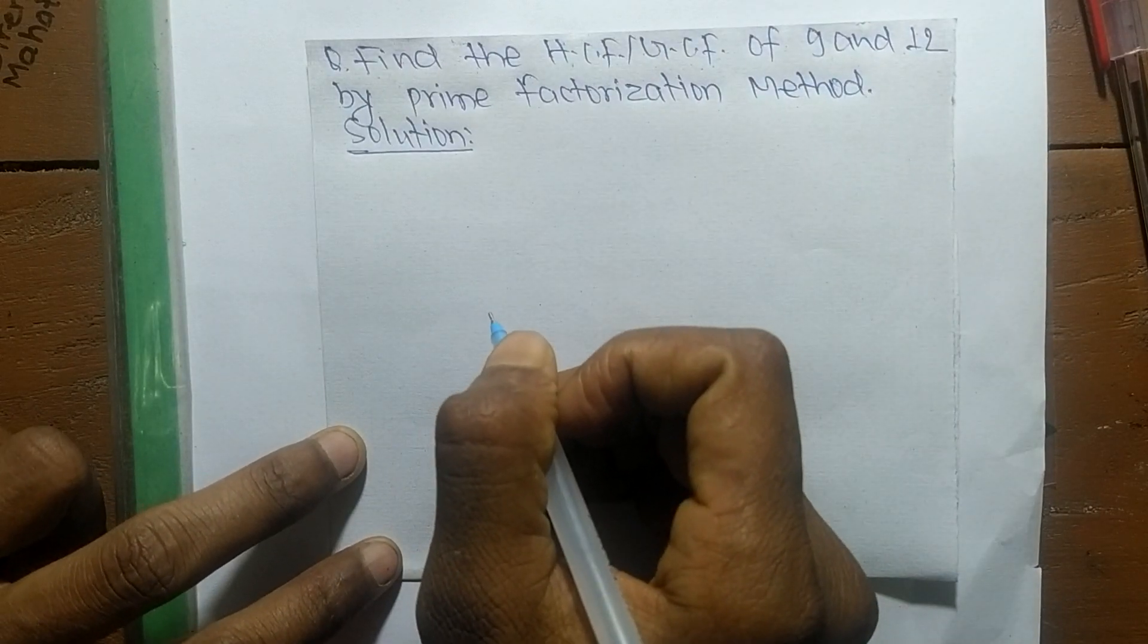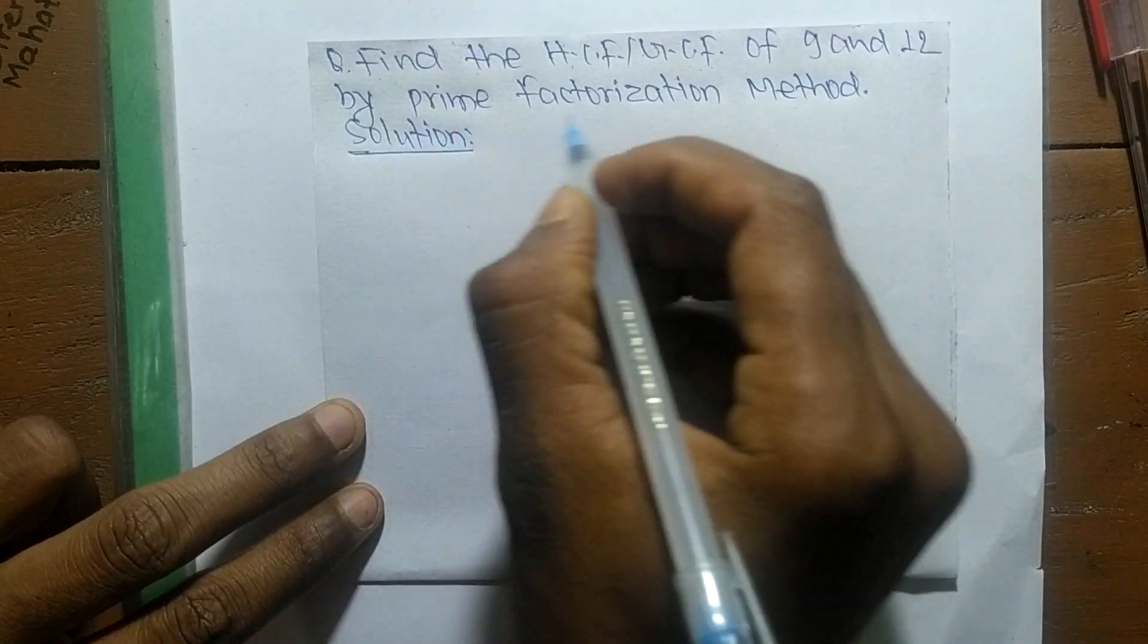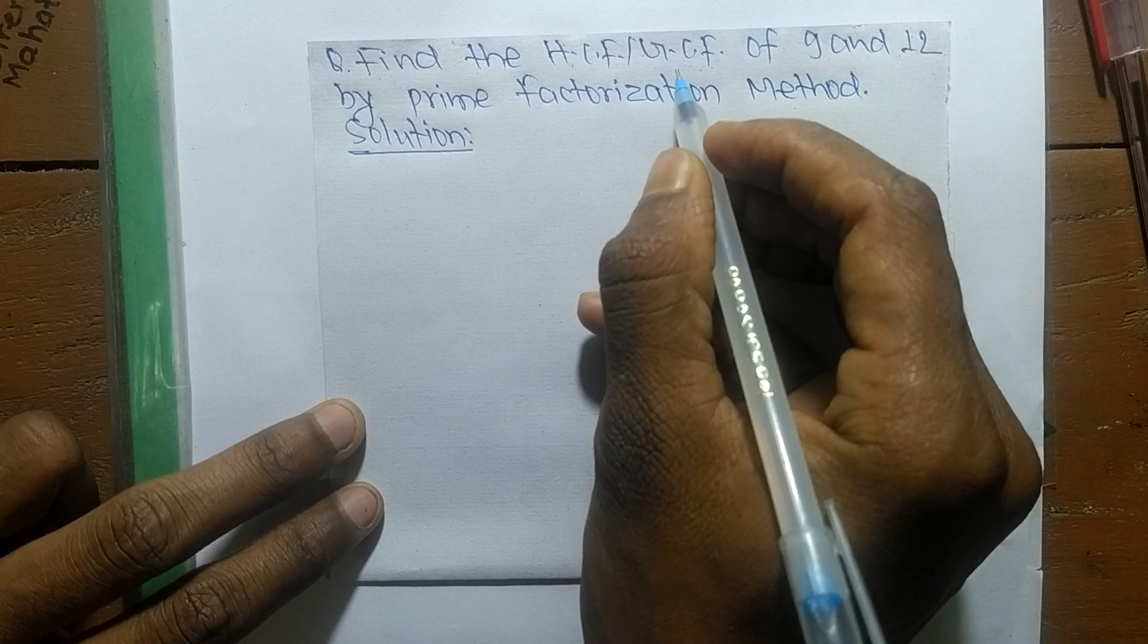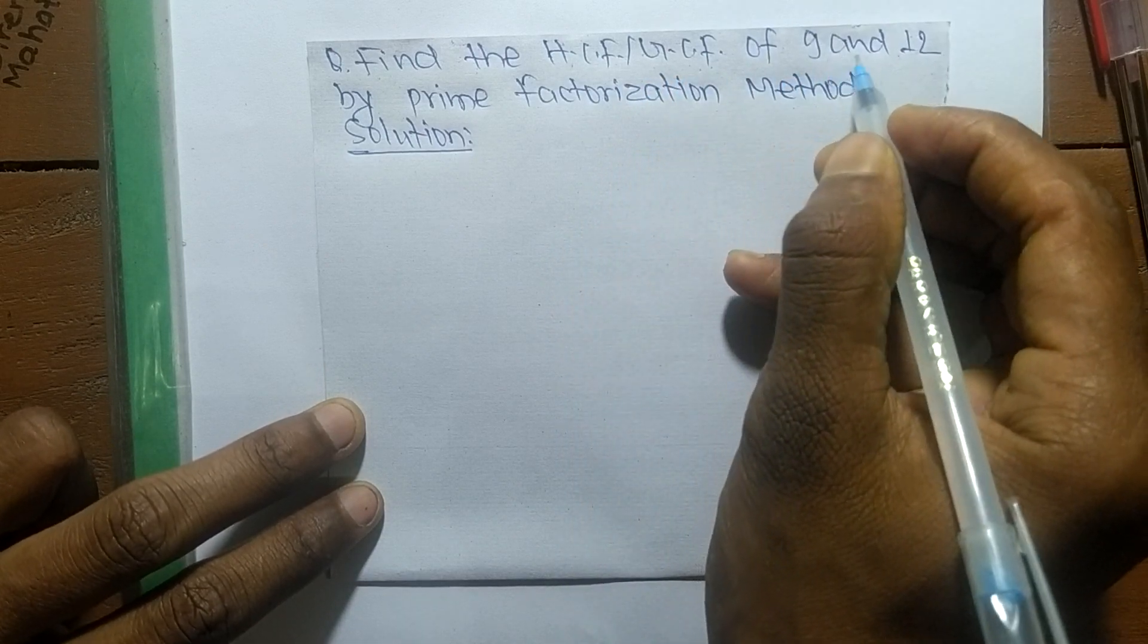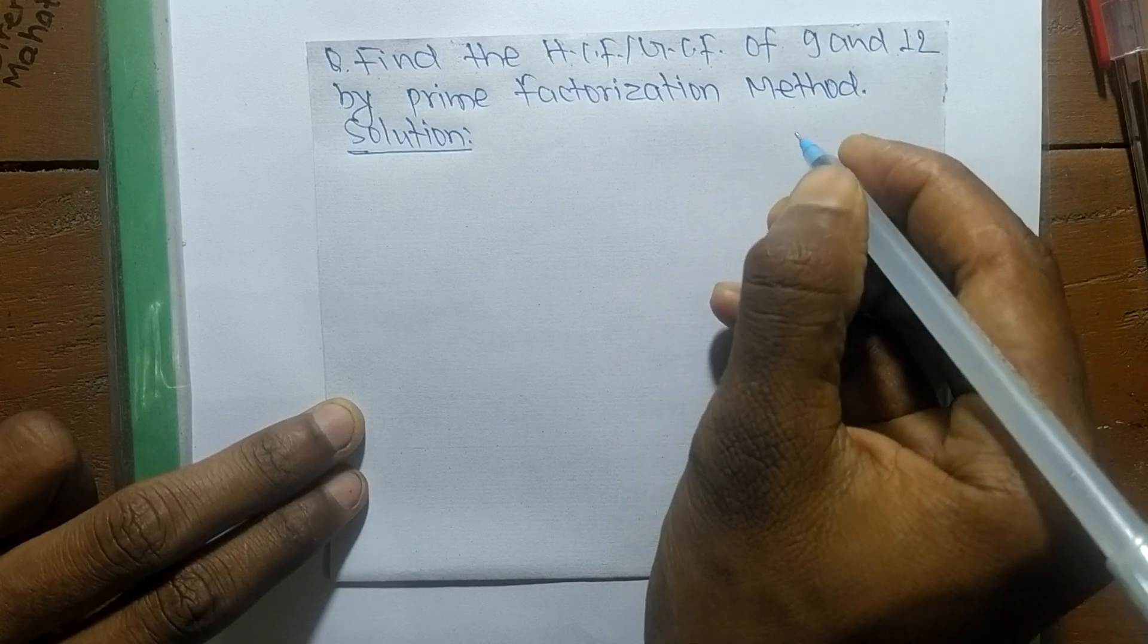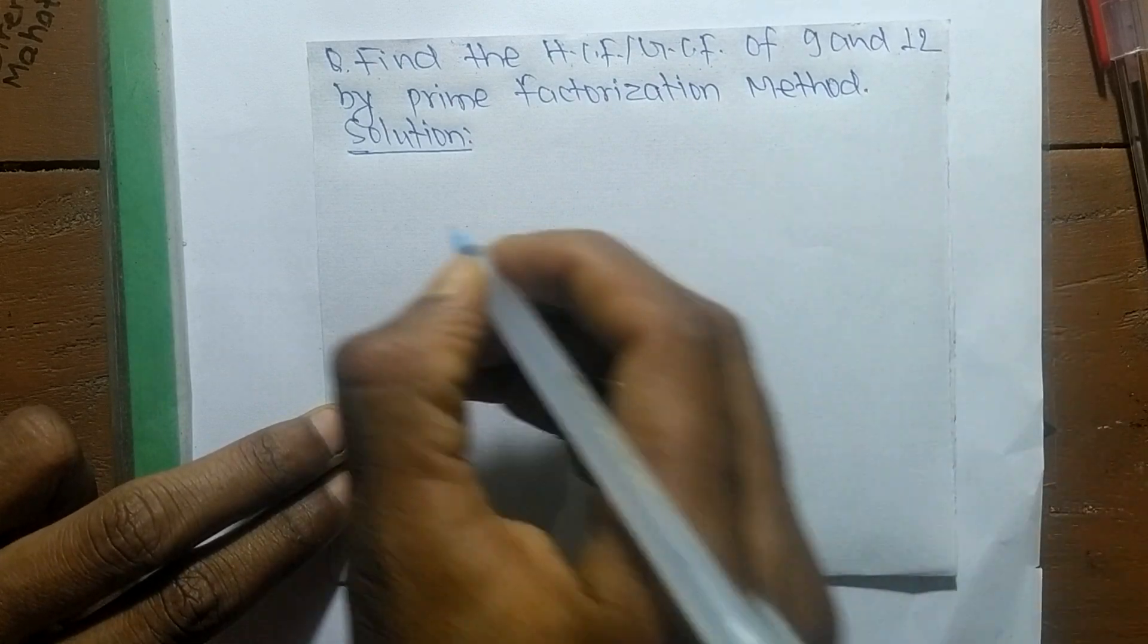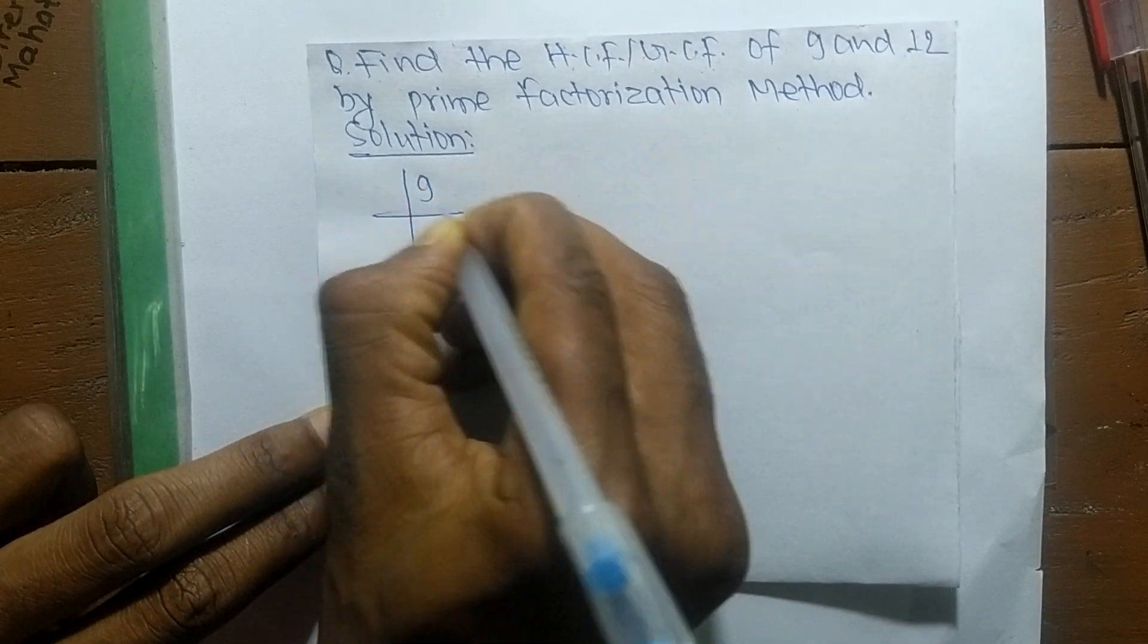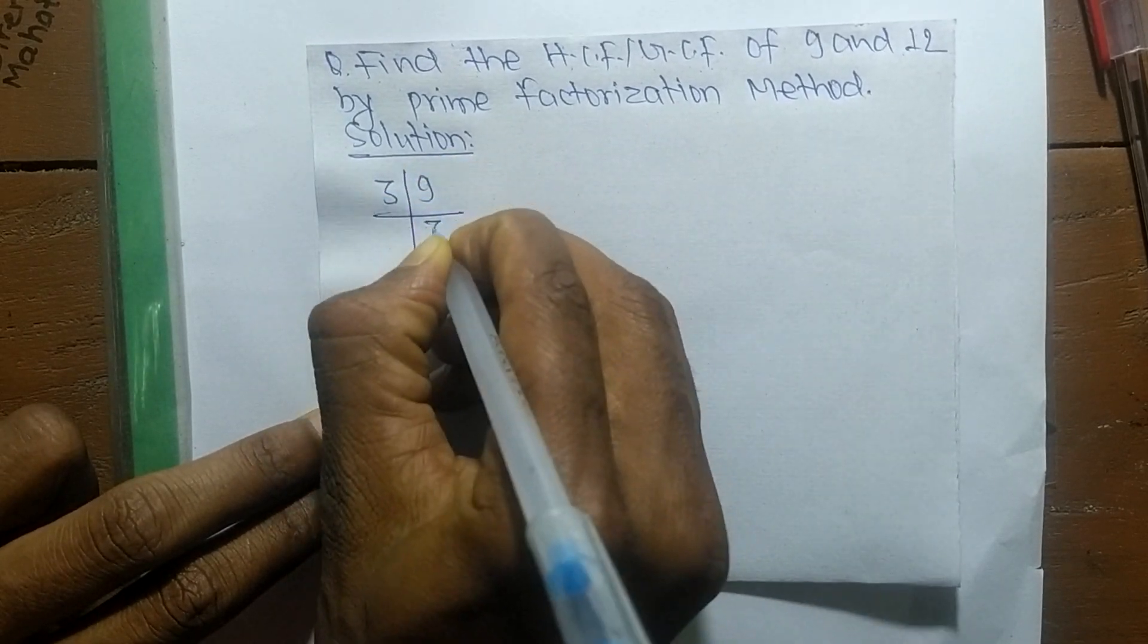Today in this video, we'll learn to find the HCF or GCF of 9 and 12 by prime factorization method. First, we find the prime factors of 9: it is 3 times 3, which means 9.